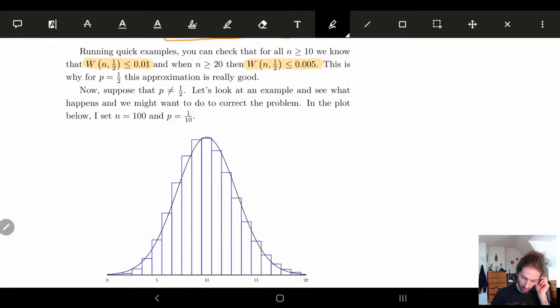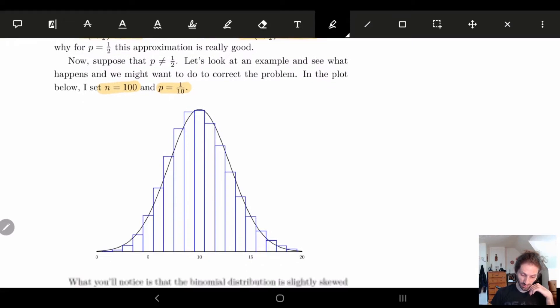But what happens if it's not equal to one-half? So here, what I'm going to do is set p equal to one over 10, and I'm going to run this calculation 100 times. So n is equal to 100.